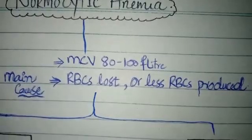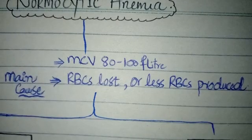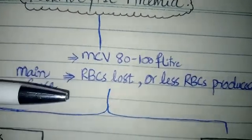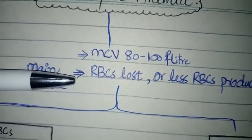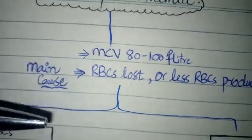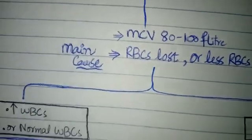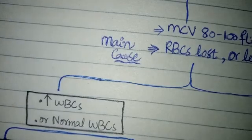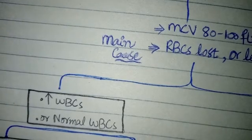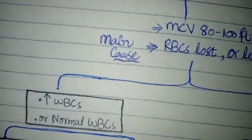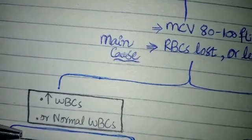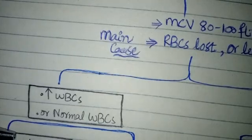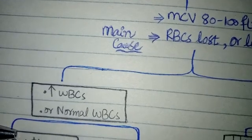To diagnose it you have to look at the complete blood count and look at the WBCs. If the WBCs are normal then you have to check the reticulocyte count, also called RETEX.